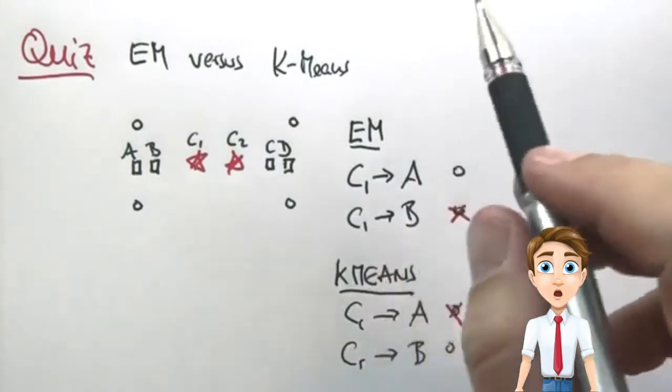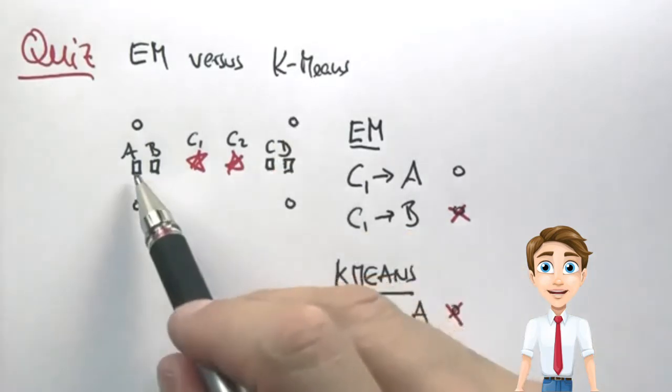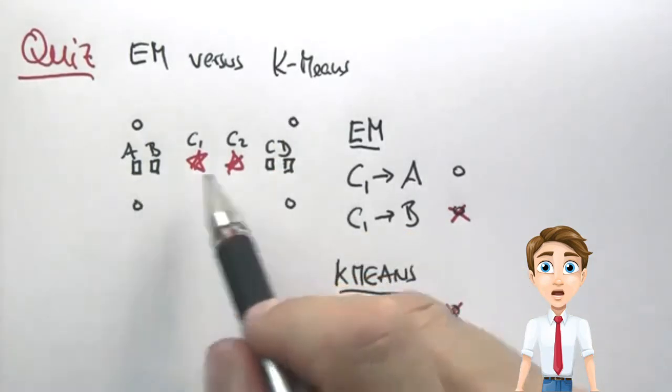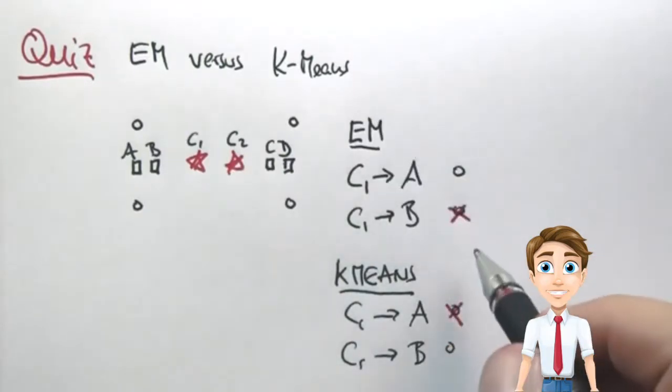In EM, however, we find that there will still be a soft correspondence to these further away points, which will then lead to a small shift of the cluster center to the right side, as indicated by B. That means K-means and EM will converge with different models of the data.